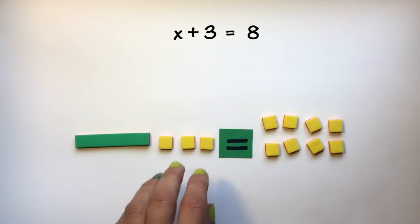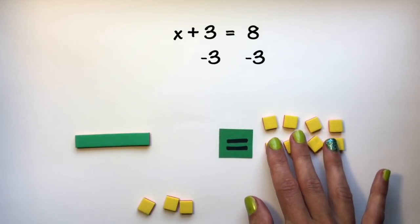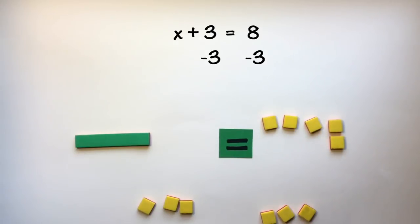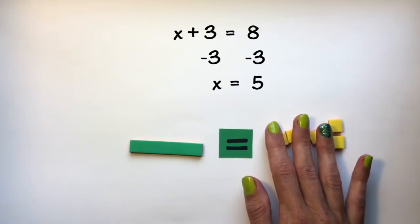So in this instance, if I wanted to remove three positive tiles from this side of my equation, I have to also do it from this side of the equation. I can do that as long as I do the same exact thing to both sides. Now I have isolated x and I can see that x = 5.